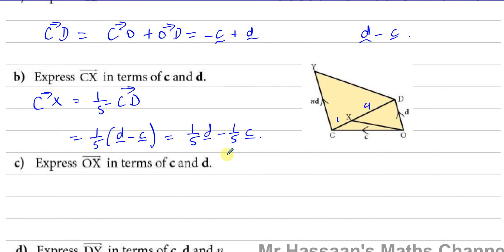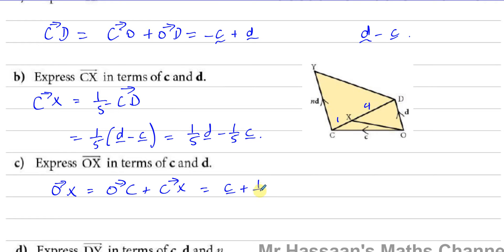Part C asks for OX in terms of c and d. OX equals OC plus CX. OC is the vector c, and CX is one-fifth d minus one-fifth c. Combining like terms: c minus one-fifth c gives four-fifths c, so OX equals four-fifths c plus one-fifth d.